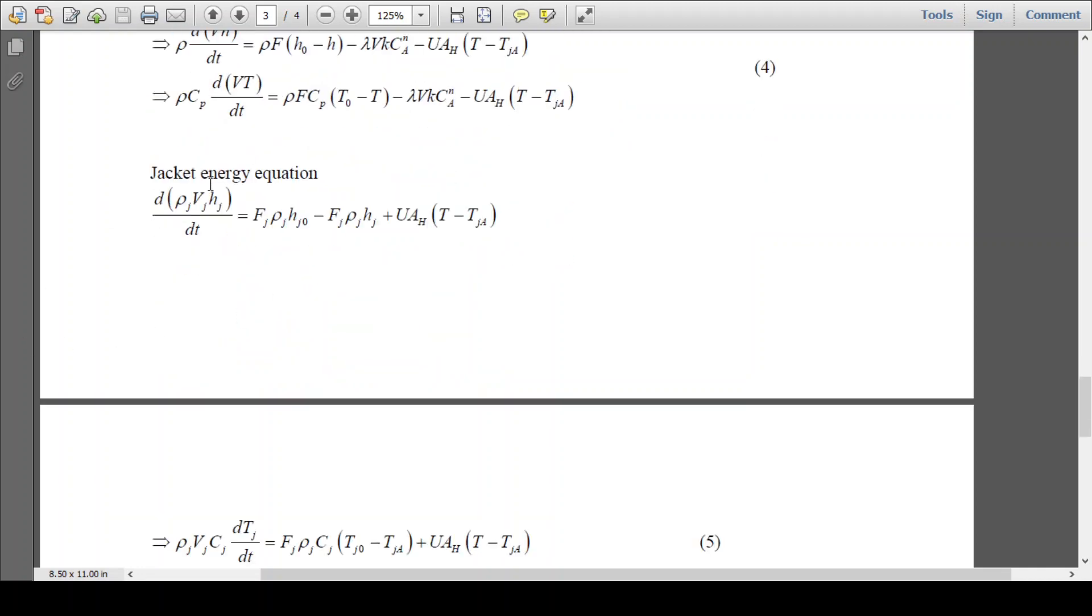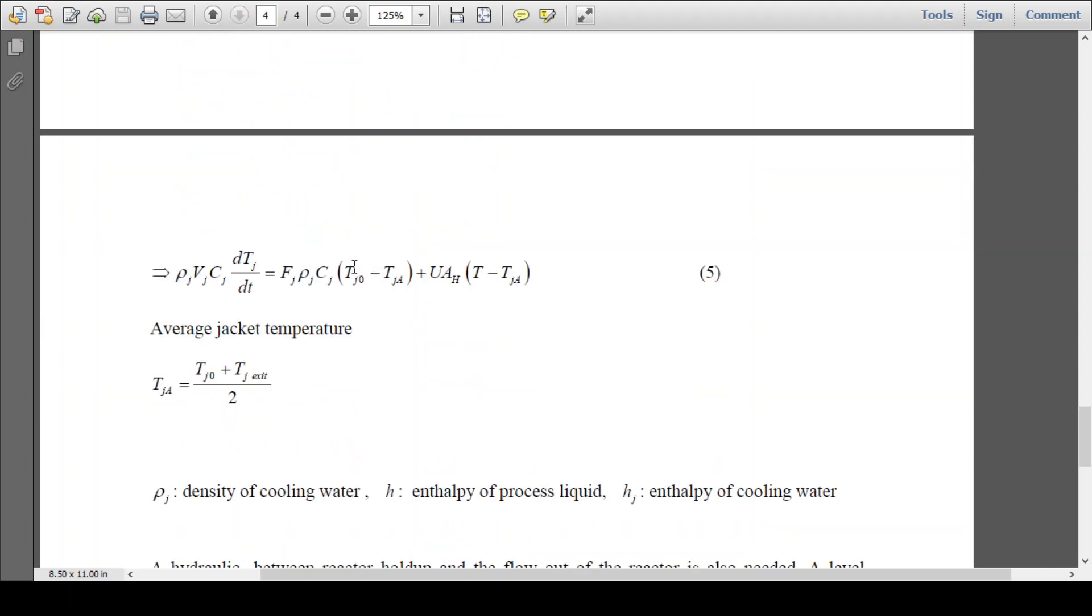Now jacket energy balance: the enthalpy within the jacket equals the enthalpy coming with the cooling fluid and enthalpy going out with the cooling water, then heat transfer from reactor to the jacket. By taking the jacket average temperature, now here we are writing h = Cj·Tj.